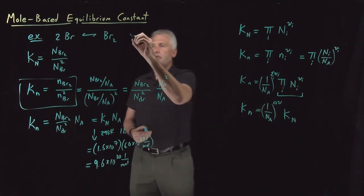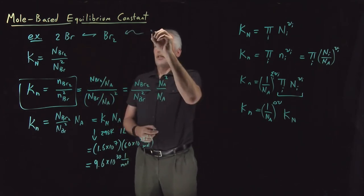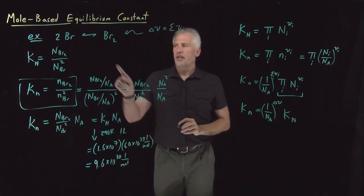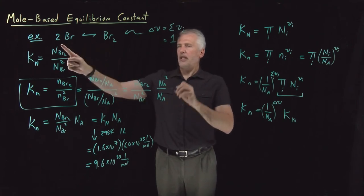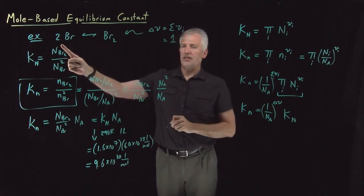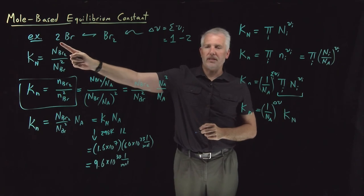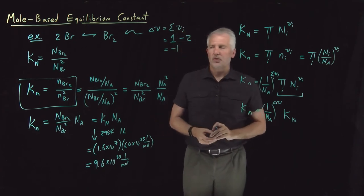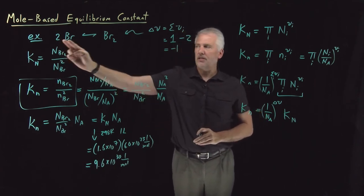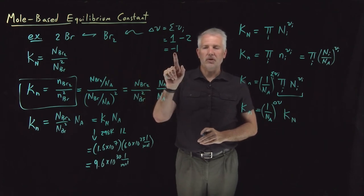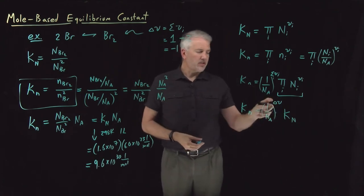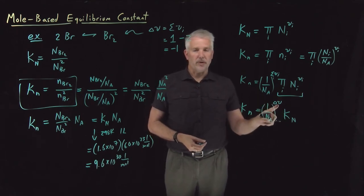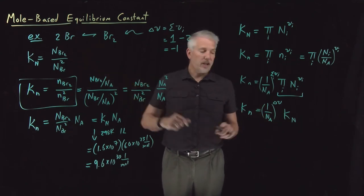For example, for the Br2 reaction, the change in stoichiometric coefficient Δν is computed by taking 1 for the product and minus 2 for the reactant: I gain 1 product and lose 2 reactants every time the reaction proceeds. That sum of 1 and negative 2 is negative 1. So when I convert 2 molecules of reactants into 1 molecule of product, I've lost 1 molecule altogether. That's the way to think about Δν: how many molecules do I gain or lose when the reaction proceeds. For the Br2 reaction, Δν = -1.